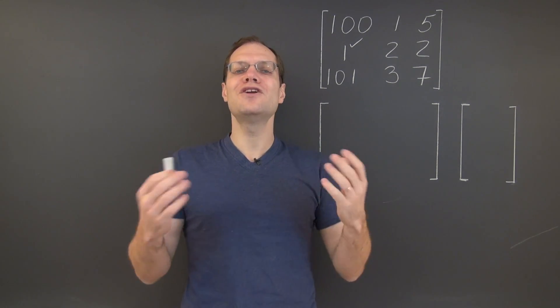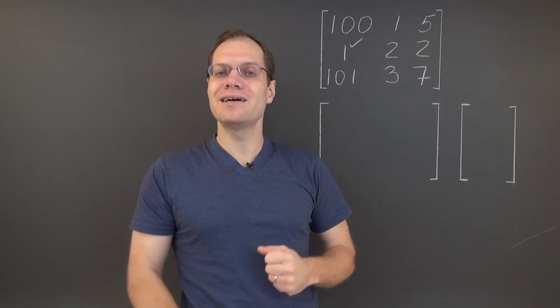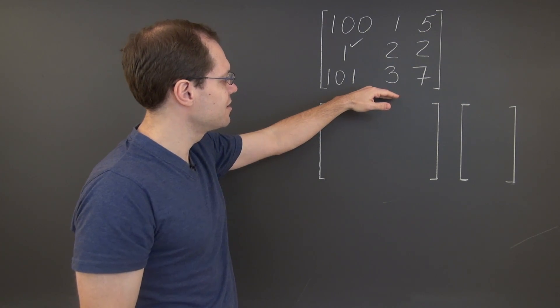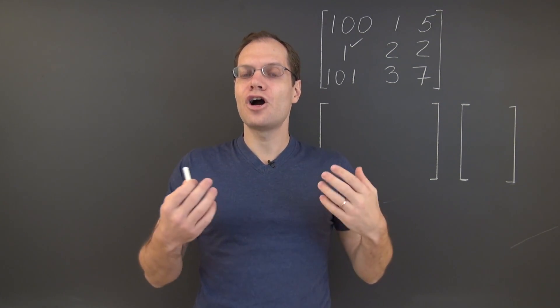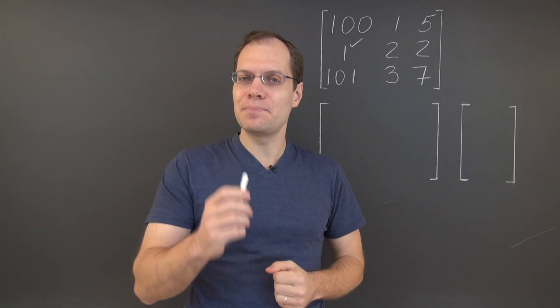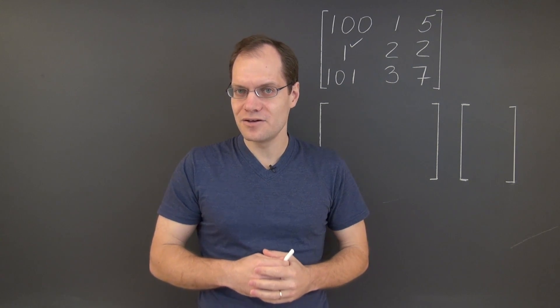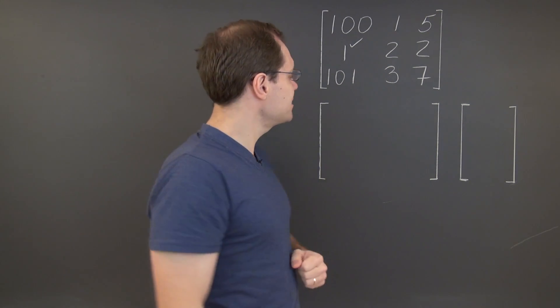But of course we have no idea what specifically the null space is. And there isn't a human being alive who could use this matrix and be able to guess the null space because the numbers are simply too complicated. But as you're about to see, a single complete step of Gaussian elimination will reveal the relationship that we're seeking. Let's take a look.